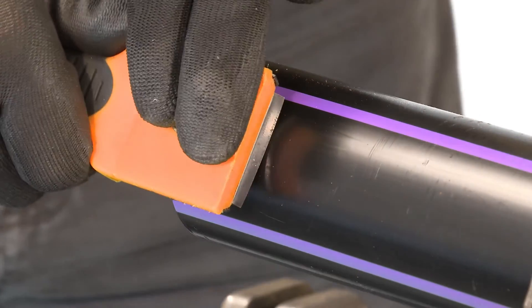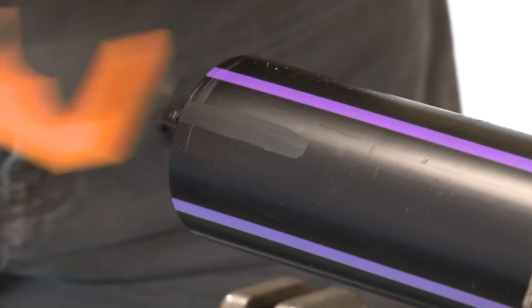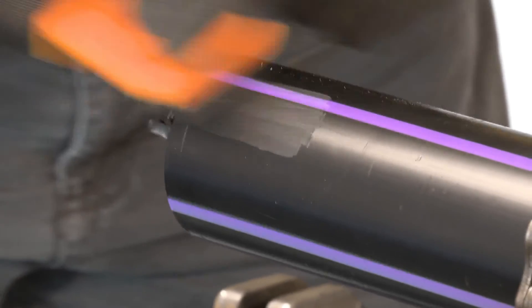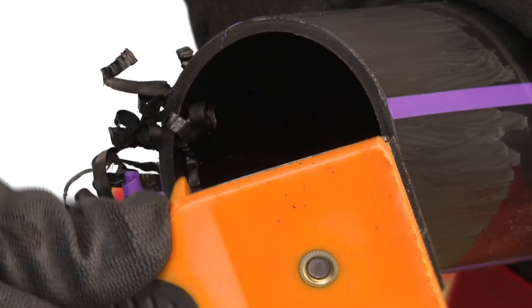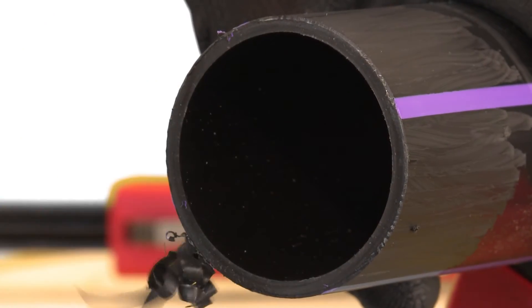Scrape the end of the pipe equivalent to 1.5 times the depth of the socket. This is to show that the pipe has been scraped when inspecting the system prior to leak testing. Once again, ensure that all swarf is removed.